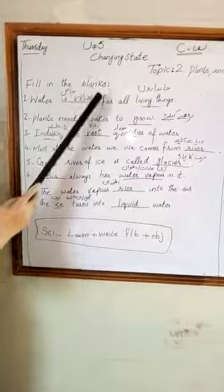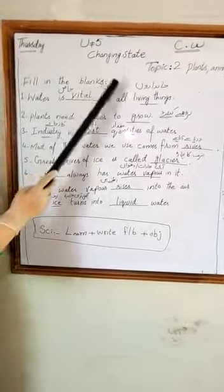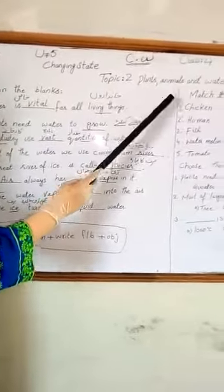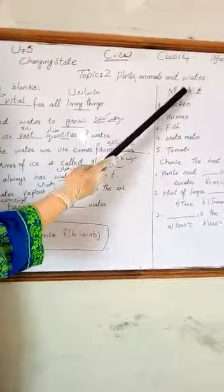I will explain to you Unit 5, Changing Stage. Topic 2: Plants, Animals and Water.